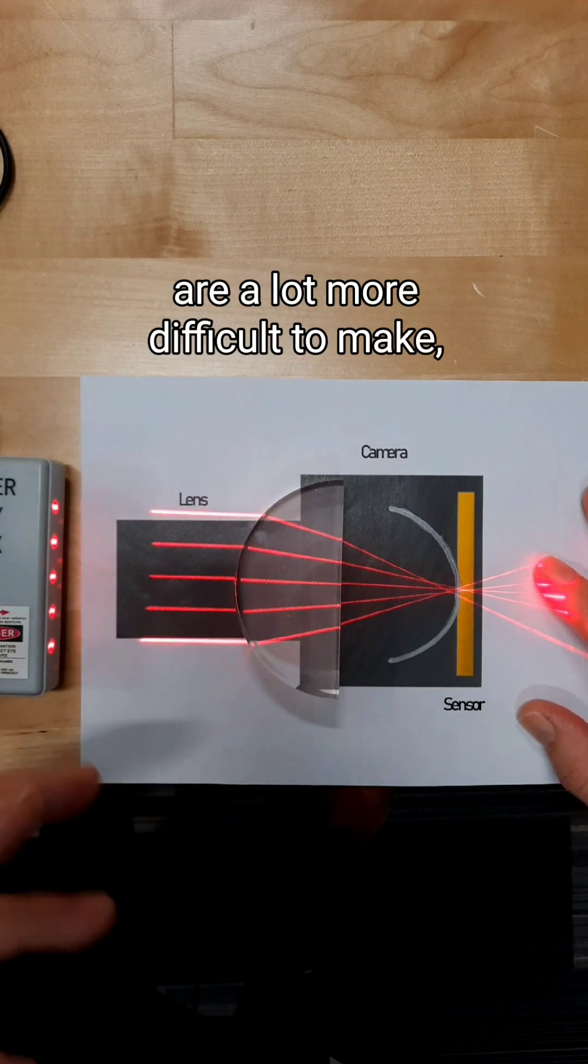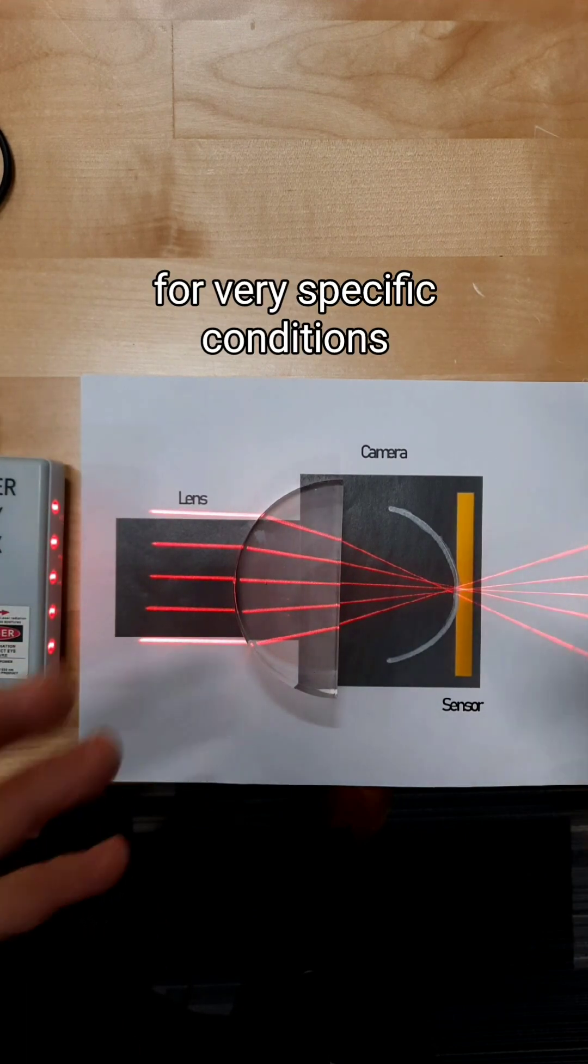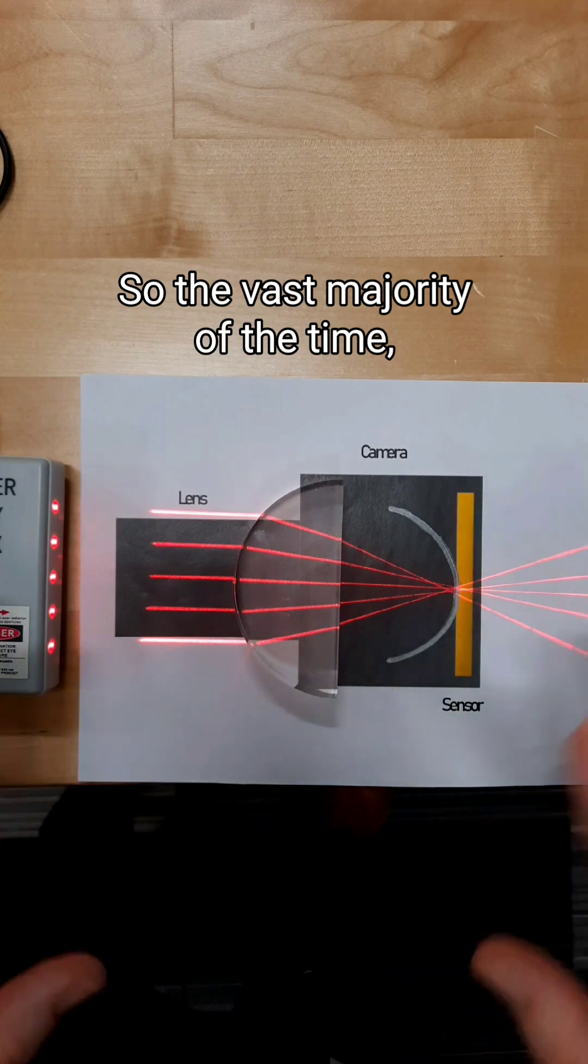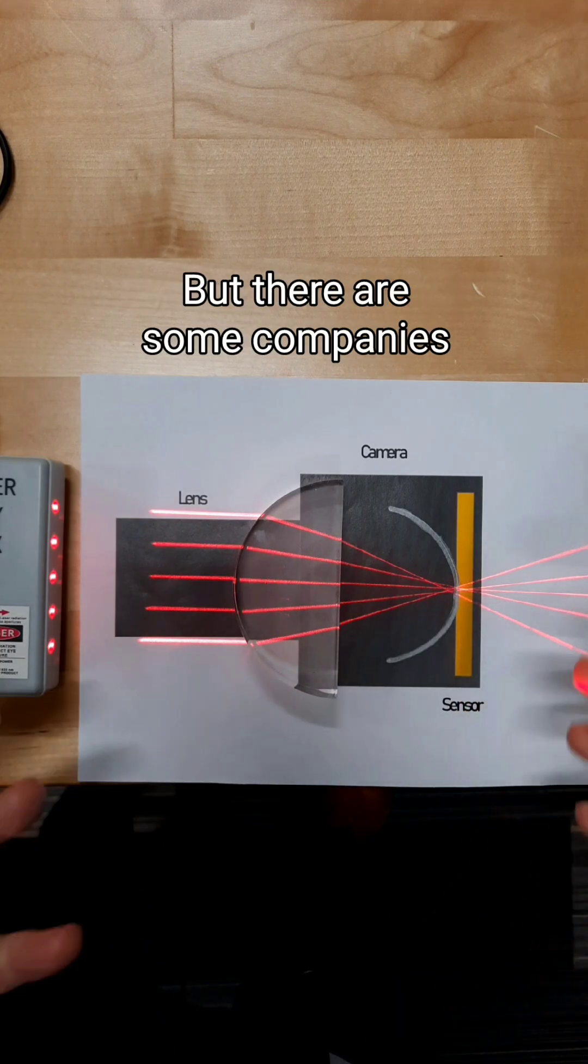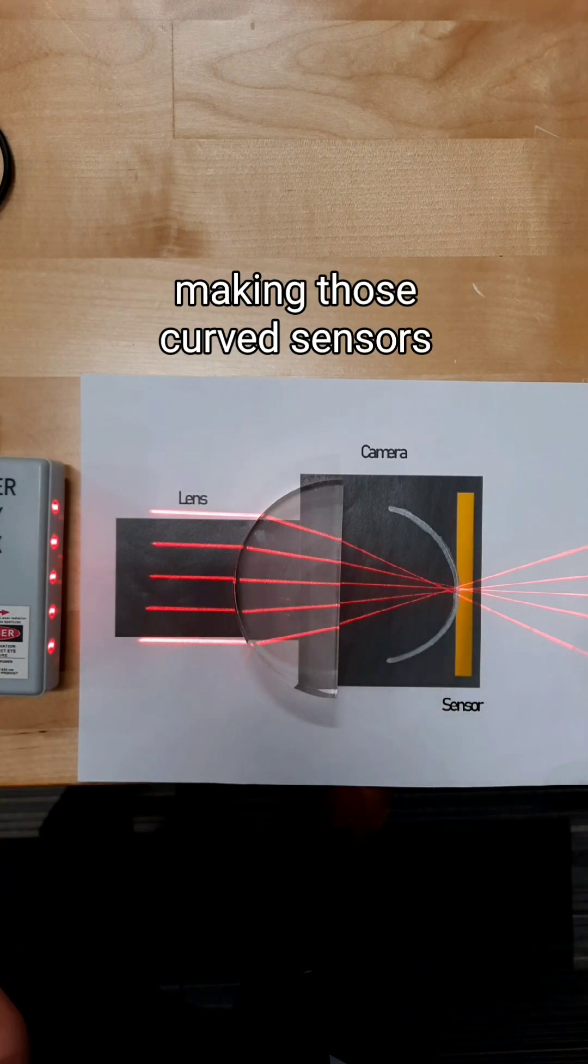However, those curved sensors are a lot more difficult to make and they need to be tailored for very specific conditions. So the vast majority of the time cameras use these flat sensors, but there are some companies making those curved sensors.